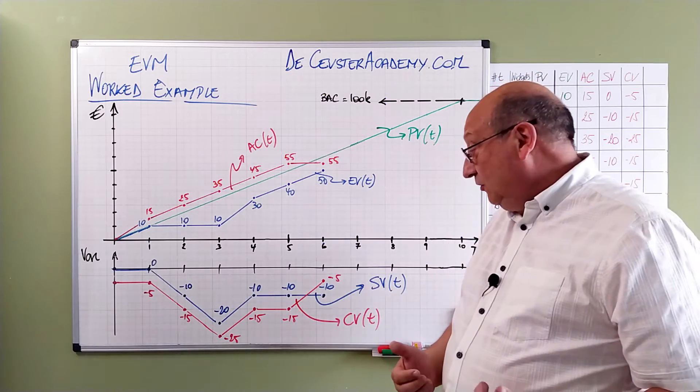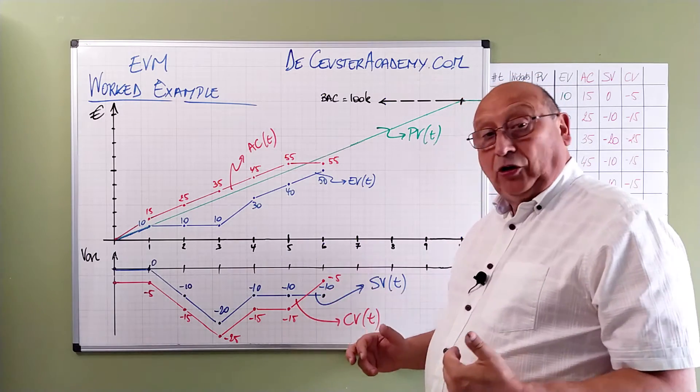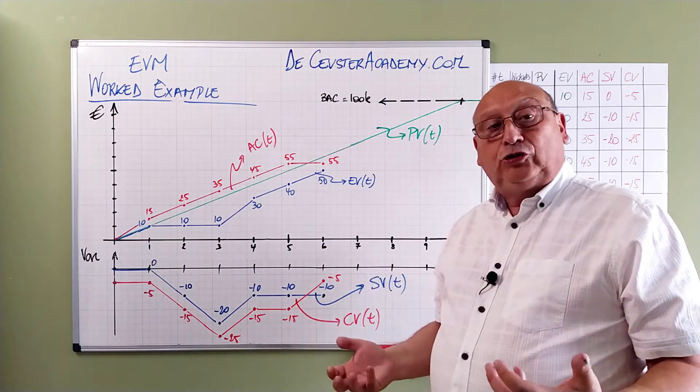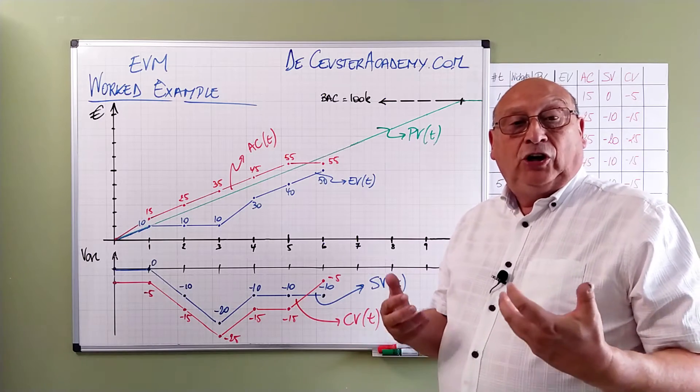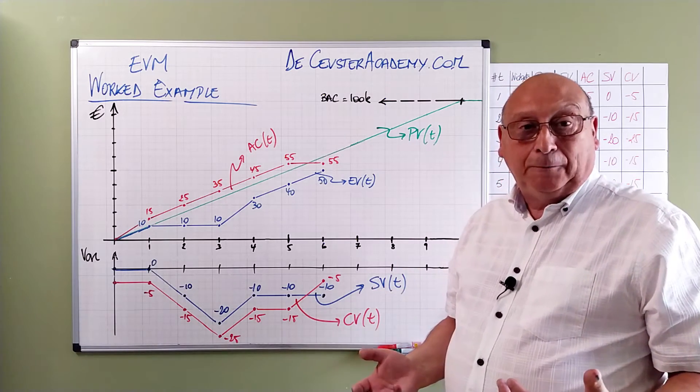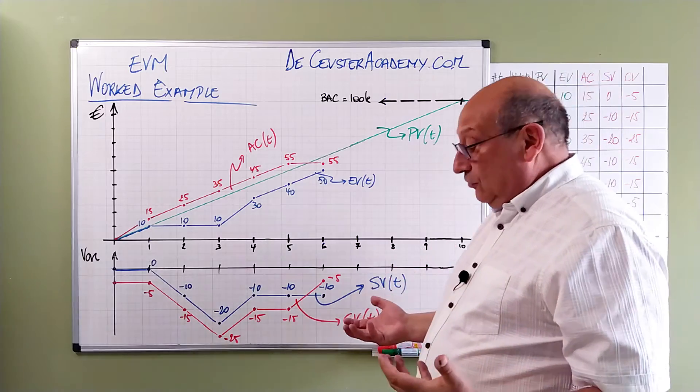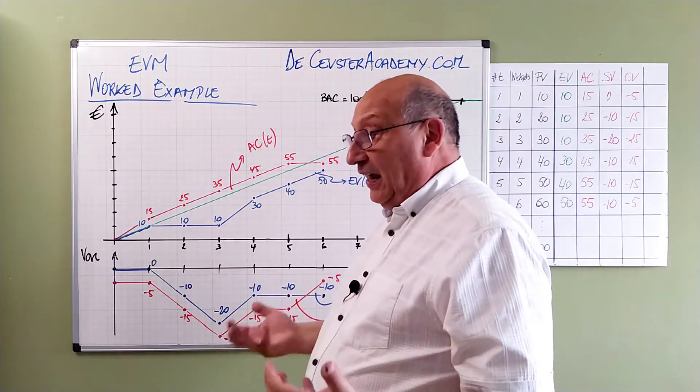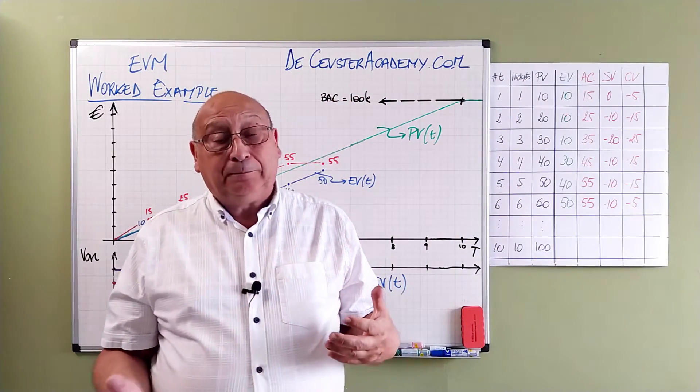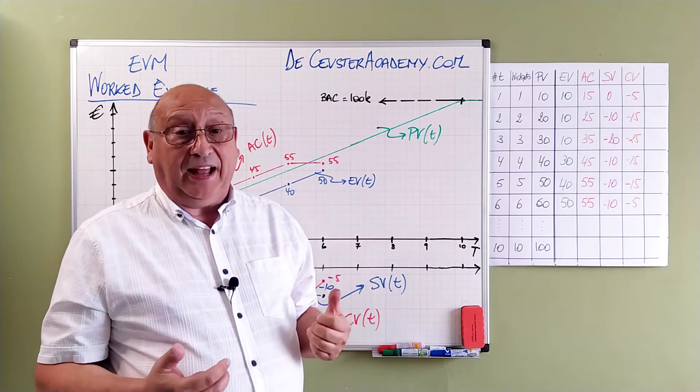We see the schedule variance is constant now. We are one element behind. And our actual cost improved. So we took some measures to give us a better situation. Looking at the earned value and the actual cost and compare it with the planned value.